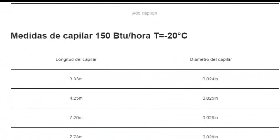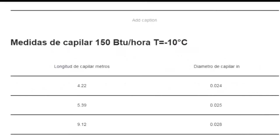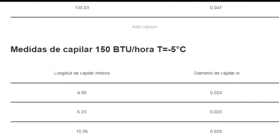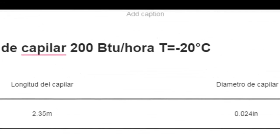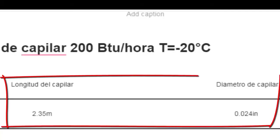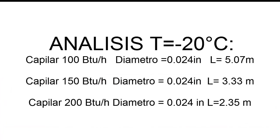We are now going to go from a cooling capacity of 200 BTU per hour at the same minus 20 degrees Celsius, with the same diameter of 0.24 inches — the recommended length is now 2.35 meters. This means that when you have the same evaporator temperature and the same diameter, if you need to increase the cooling capacity, then you must decrease the length of the capillary.